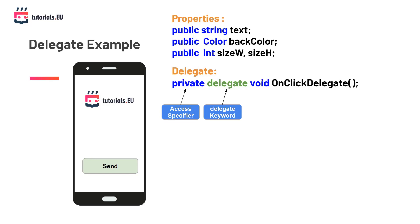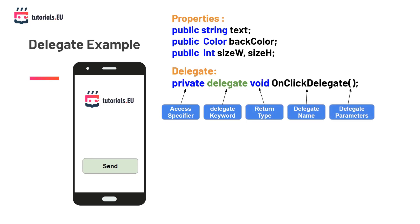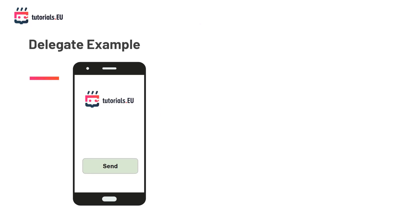We start with the access specifier, then the delegate keyword which tells the compiler we are defining a new type, and finally we specify the type of methods our delegate can store — meaning the return type and parameters. OnClickDelegate is the name of the delegate we defined. The next step is to create a variable of this new delegate type, defined just like any variable in C# — starting with public, then the type OnClickDelegate, and lastly the variable name onclick. This variable can hold a reference to any method as long as it has void as the return type and takes no parameters.